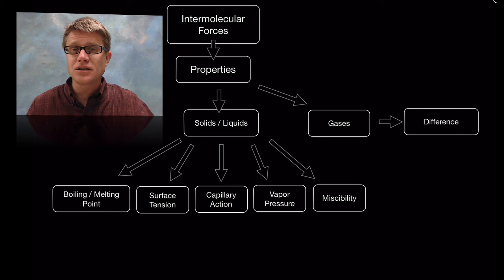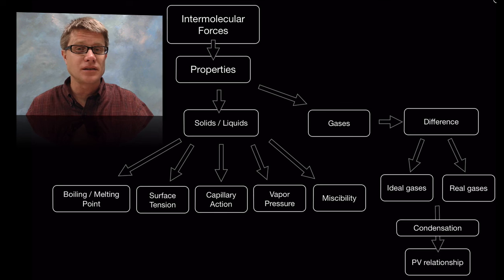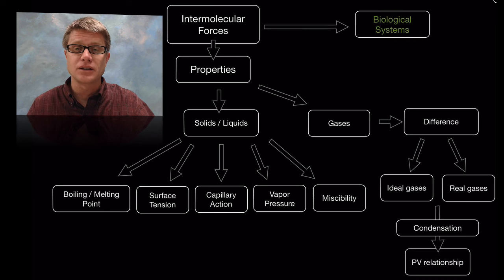In gases there's not too many intermolecular forces because they're moving around really quickly. But when there are intermolecular forces they explain the difference between an ideal gas, which can be explained using the ideal gas law, and real gases. This usually occurs towards condensation, and we can use a PV relationship to find it.